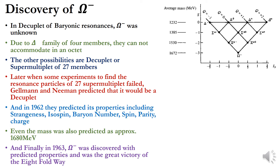Another victory of the Eightfold Way was the discovery of Omega-minus (Ω⁻). In the decuplet of baryonic resonances, Ω⁻ was initially unknown. Since the Delta quadruplet has four members, they could not fit into an octet. The other possibilities were a supermultiplet of 10 or 27 members. When experiments to find resonance particles for the 27-member supermultiplet failed, Gell-Mann and Ne'eman predicted it would be a decuplet.